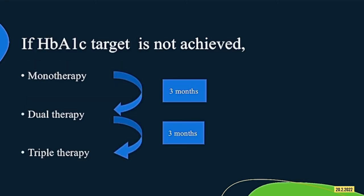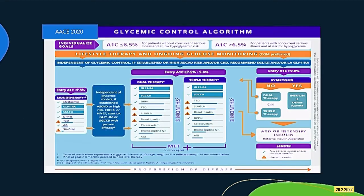If the HbA1c target is not achieved by monotherapy within 3 months, dual therapy should be considered. If the target is not met even after dual therapy for the next 3 months, triple therapy should be considered.